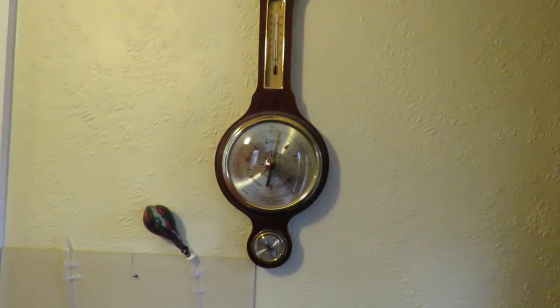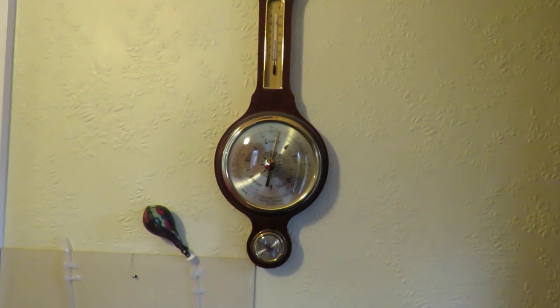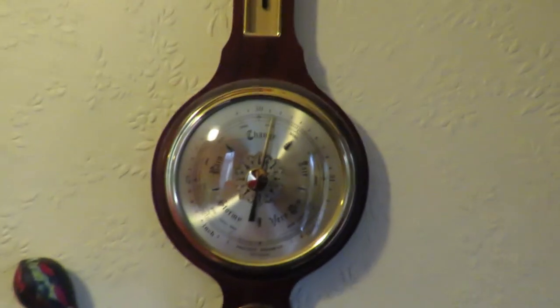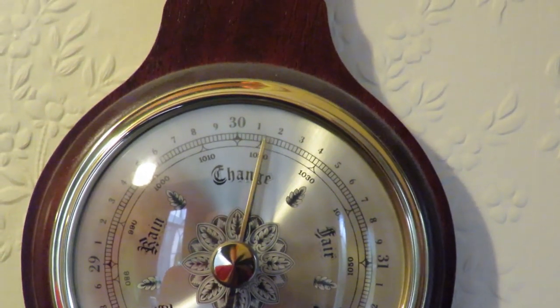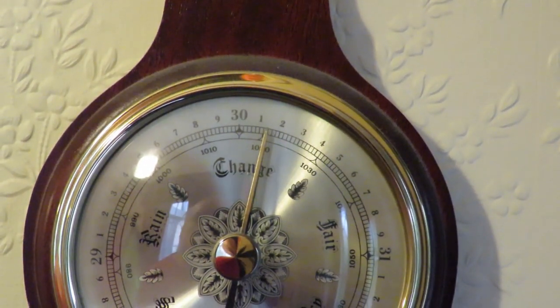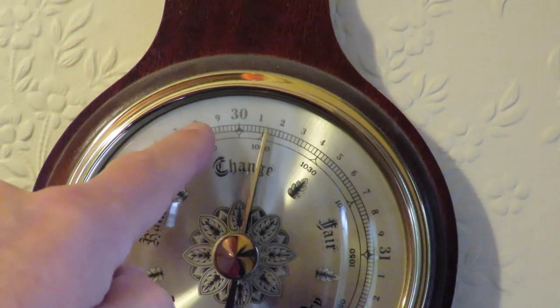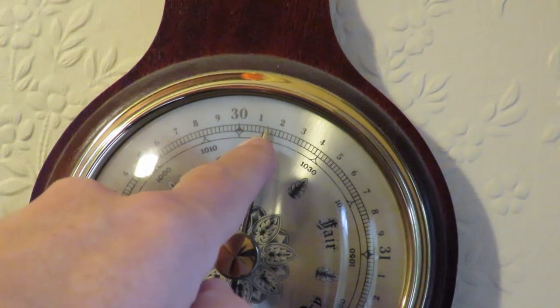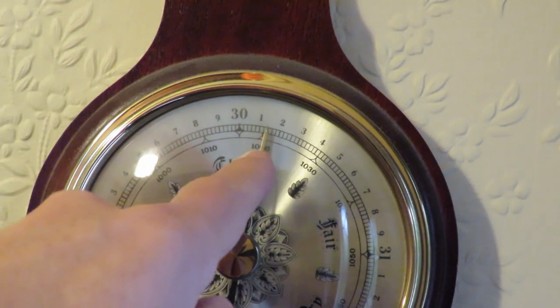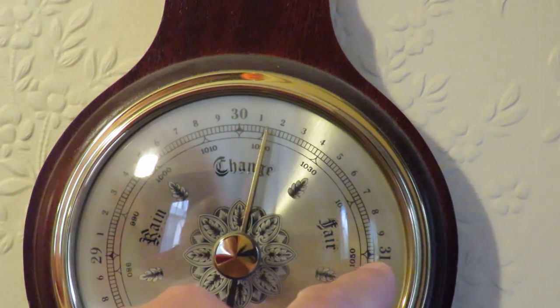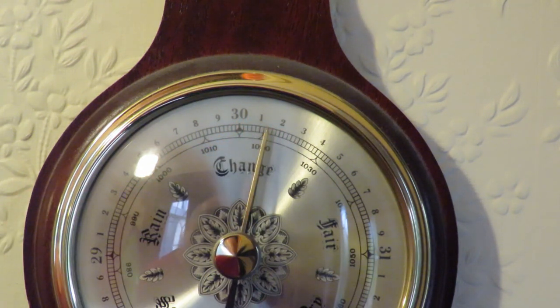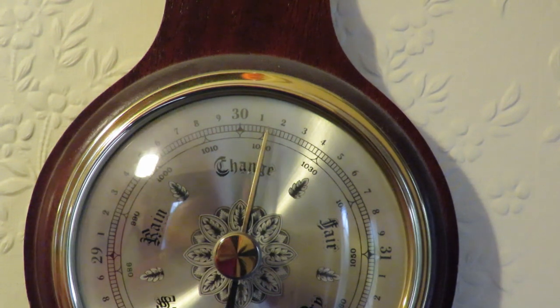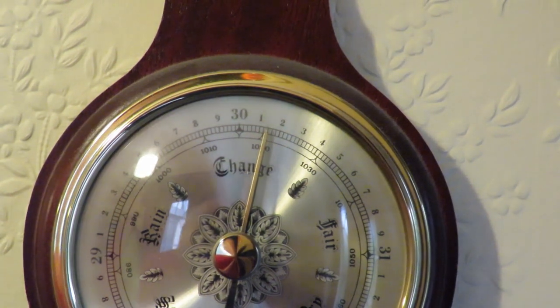In my hallway that's our existing barometer. So that's saying 30.14 I think. 30.14 because that's 31 so 30.14 at this moment in time. So if I then put a line there.